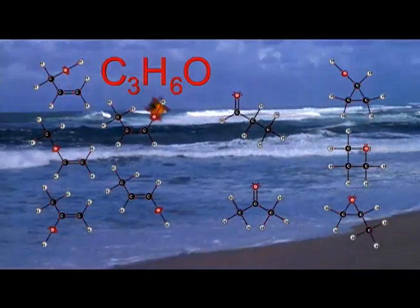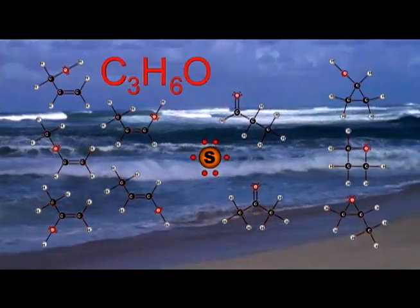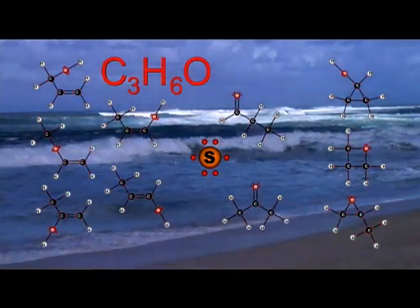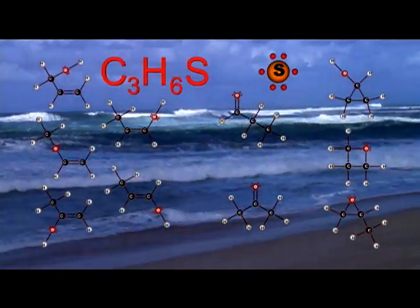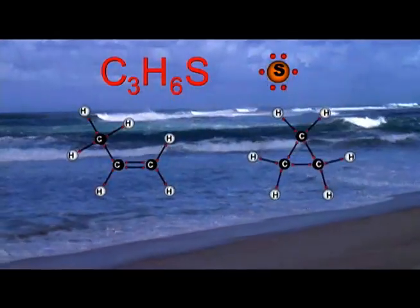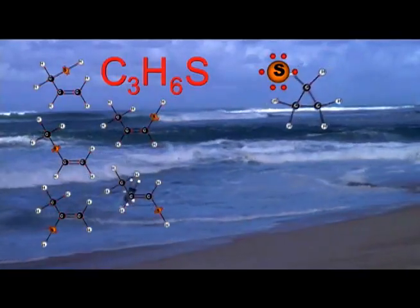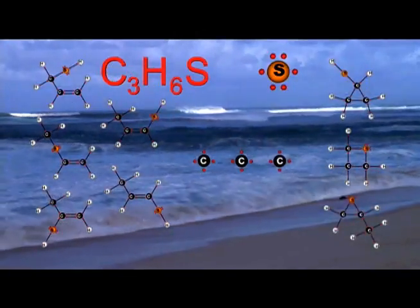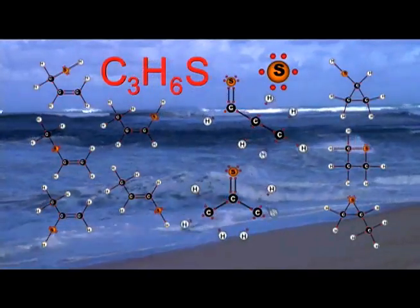Another common element used when drawing organic Lewis structures is sulfur. Because sulfur is in the same family as oxygen, it also has six valence electrons. Therefore, it can be treated in the same manner as oxygen. For example, if we were to draw all the Lewis structures for C3H6S, we use the same approach as we did for C3H6O: ignore the sulfur, calculate the degree of unsaturation, draw intermediate solutions ignoring the sulfur atom, and play the sulfur insertion game. If there was at least one degree of unsaturation, we would draw double-bond sulfur-carbon compounds to yield all possible structural isomers.